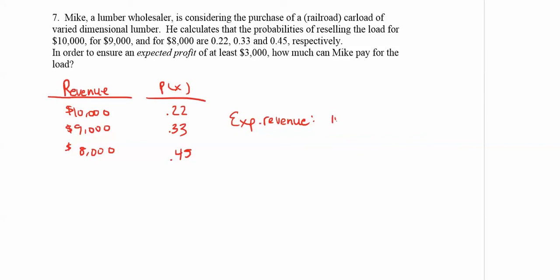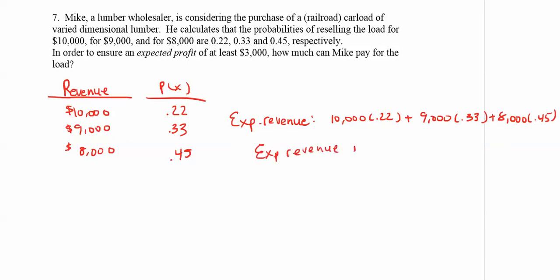The expected revenue is calculated by multiplying these outcomes by the probabilities and finding that sum. So we have $10,000 times .22, plus $9,000 times .33, plus $8,000 times .45. The expected revenue is $8,770.